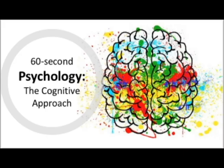The cognitive approach also assumes that the brain is much like a computer. Key concepts include reconstructive memory, cognitive priming, and cognitive biases. These theories are supported by studies such as 'War of the Ghosts' by Bartlett, 'An Investigation into Food Advertising and Snacking' by Harris, Bargh, and Brownell, and 'The Reconstruction of Automobile Destruction' by Loftus and Palmer.